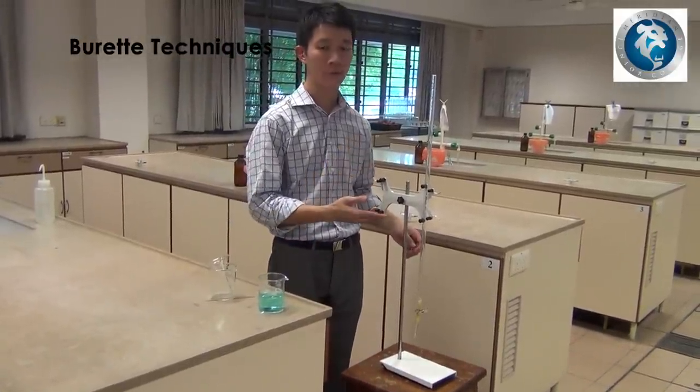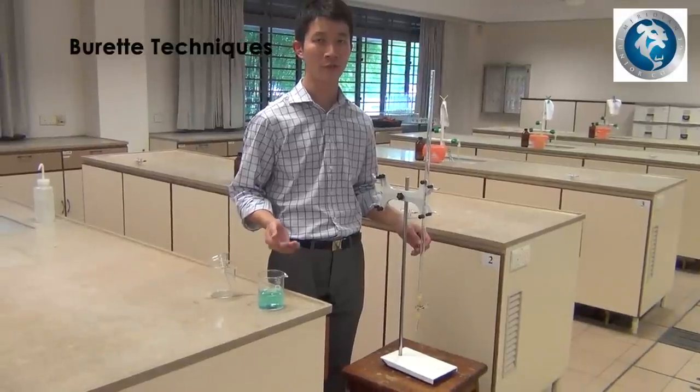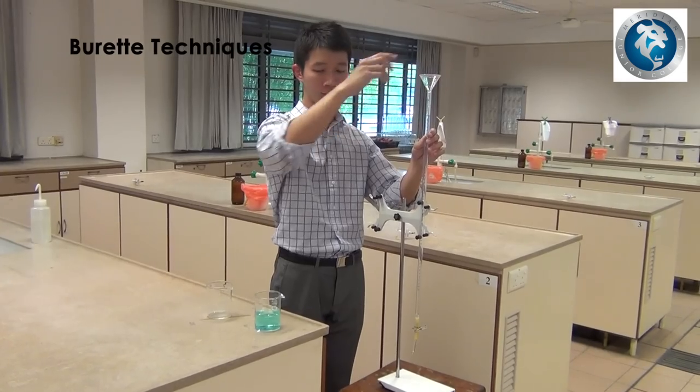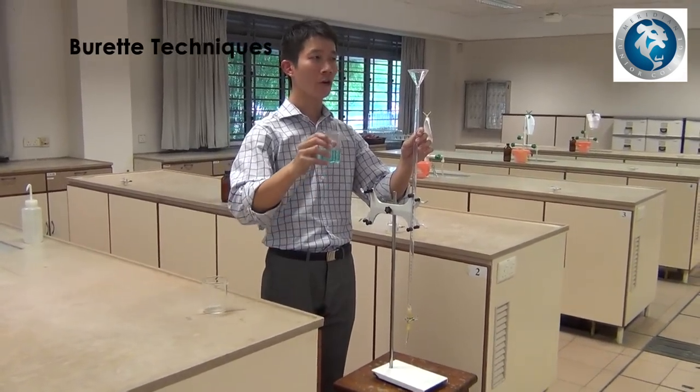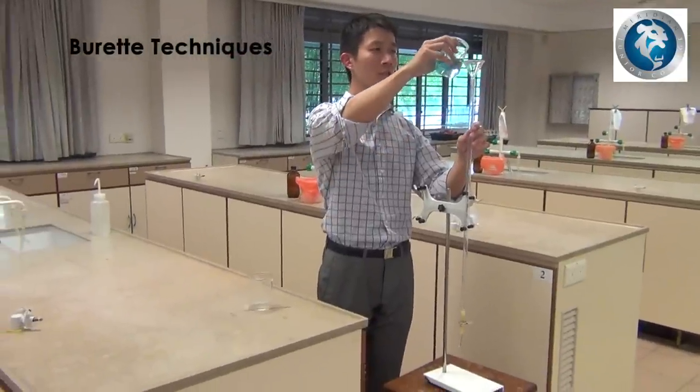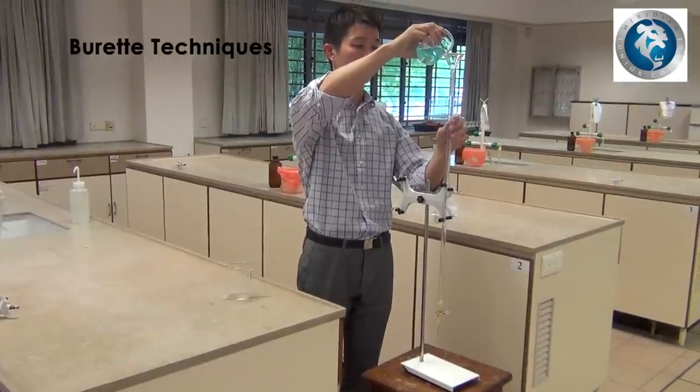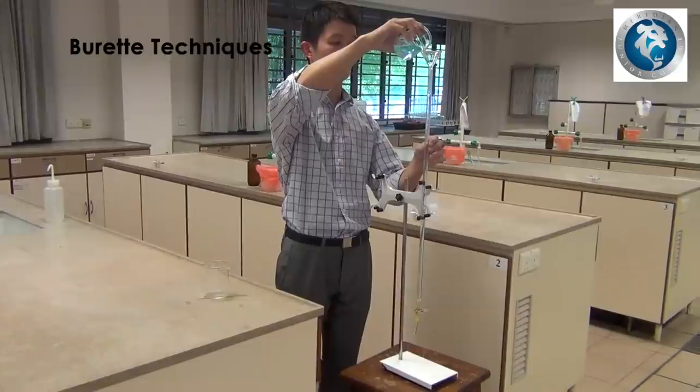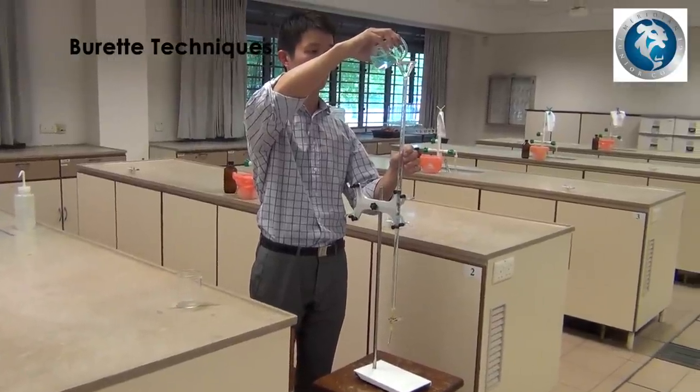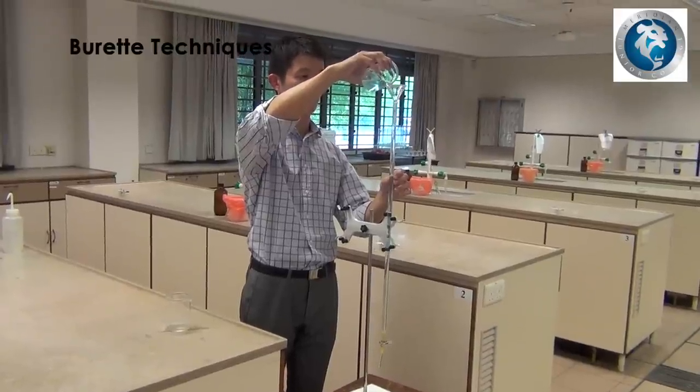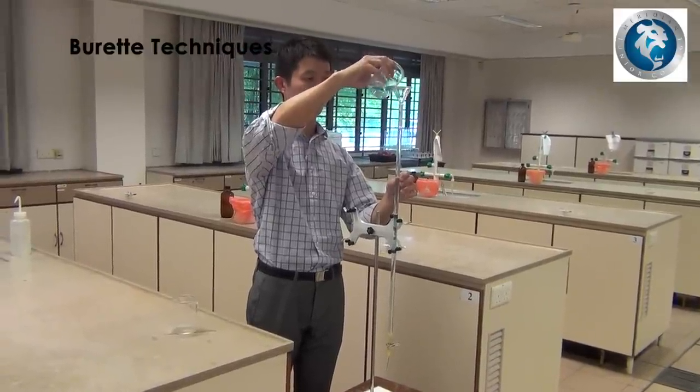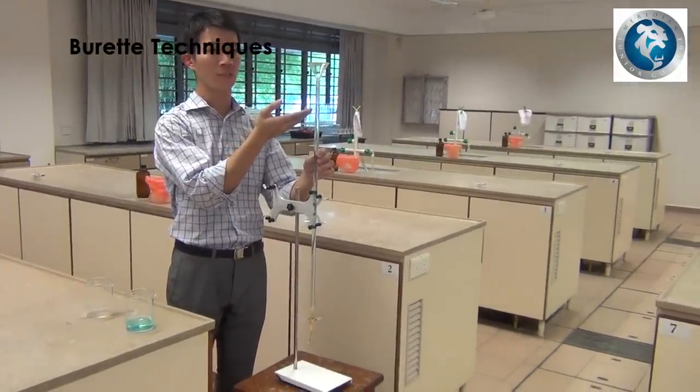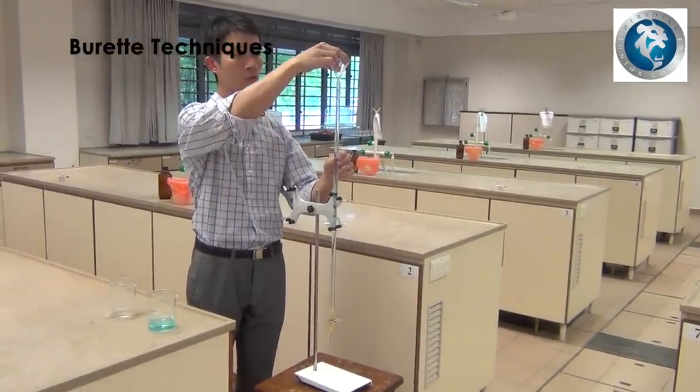Now you may proceed to fill the burette with the solution that you will be using for the titration. Place the glass funnel back onto the burette. Slowly pour the solution into the burette through the glass funnel. Pour the solution until it is slightly above the zero cubic centimeter mark. Remove the glass funnel.